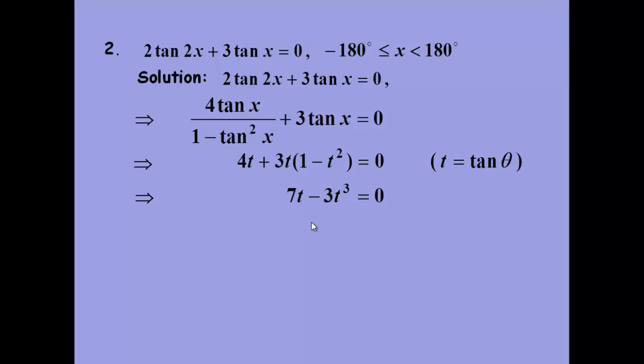Again, we're now just going to factor out tan x, and we get tan x equals zero there, or tan squared x equals seven over three in order to make this bracket zero.